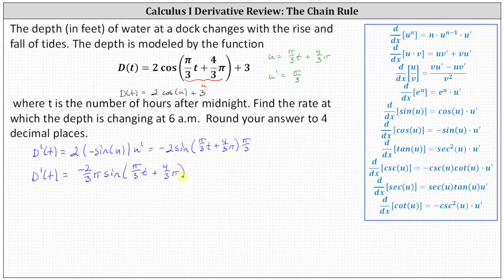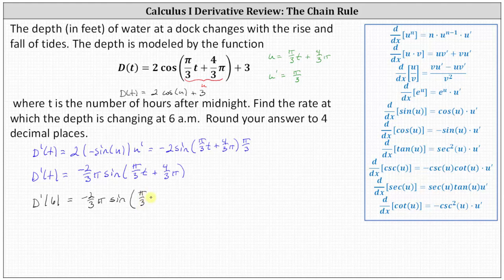Now to find the rate at which the depth is changing at 6 a.m., because 6 a.m. is six hours after midnight, we need to determine the derivative function value d prime of six, which is equal to negative two-thirds pi times sine of the quantity pi divided by three times six, plus four-thirds pi.